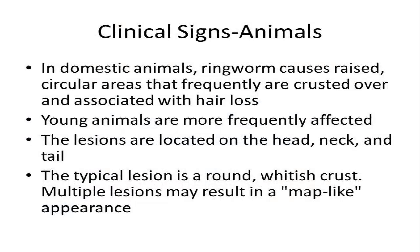In animals, the classic ringworm lesions are patchy areas of hair loss and scaliness, usually with very little inflammation or redness. It is not usually itchy. In domestic animals, ringworm causes raised, circular areas that frequently are crusted over and associated with hair loss.